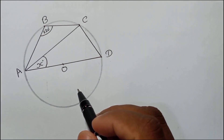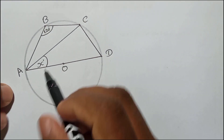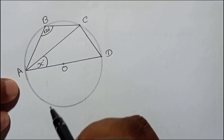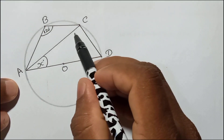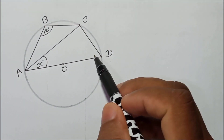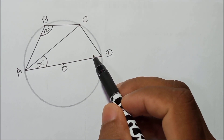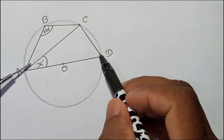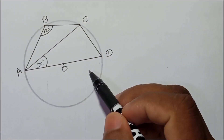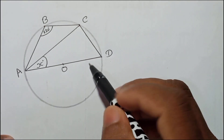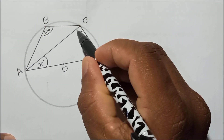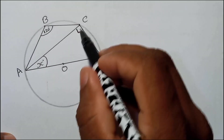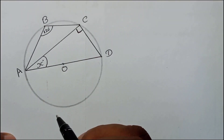Here, how to find x. They tell us OD is the diameter, which means O is the center. This angle must be 90 degrees because, from the diameter, the subtended angle at the circumference — we call this the semicircle angle — is 90 degrees. So that means this angle here must be 90 degrees.